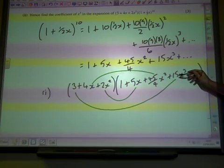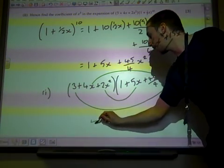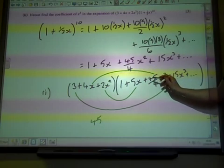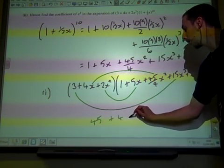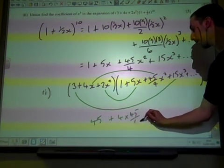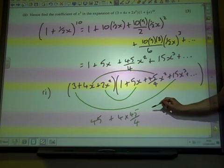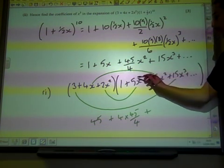That first one, that's three times fifteen, so that's going to give me forty-five. That's going to give me four times forty-five quarters, and that next one is going to give me two times five.